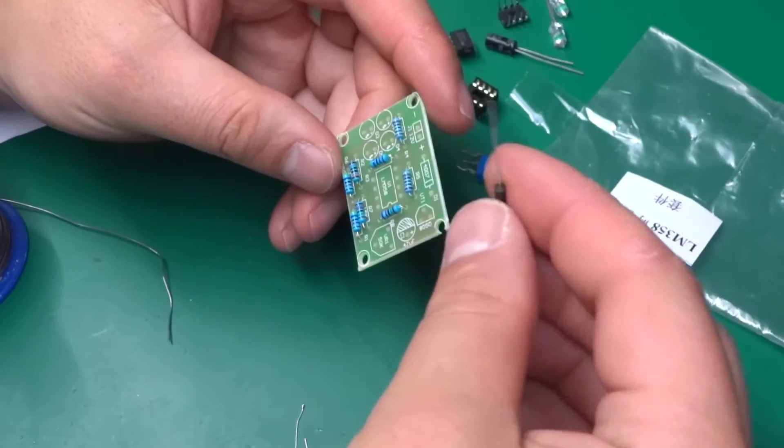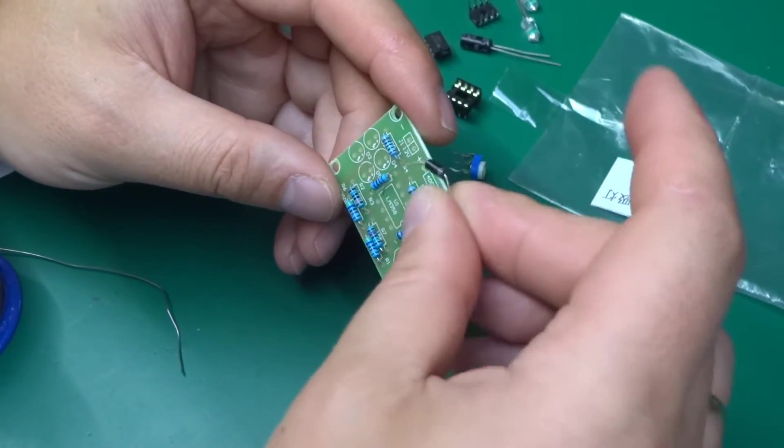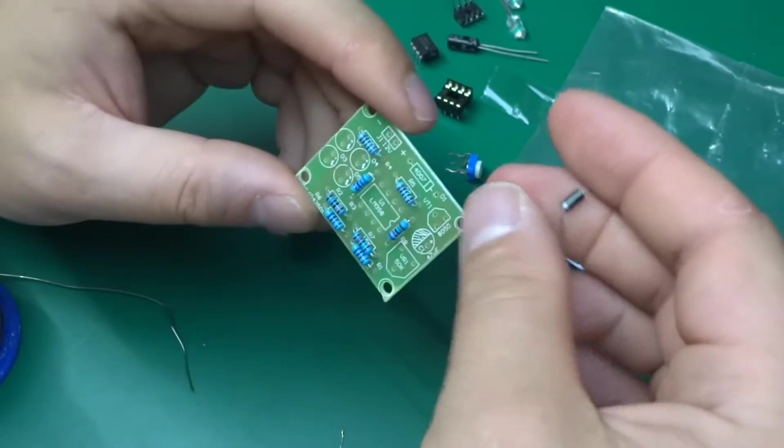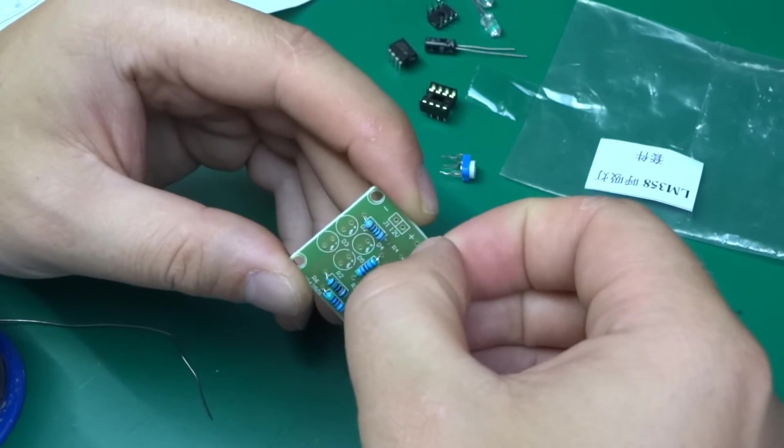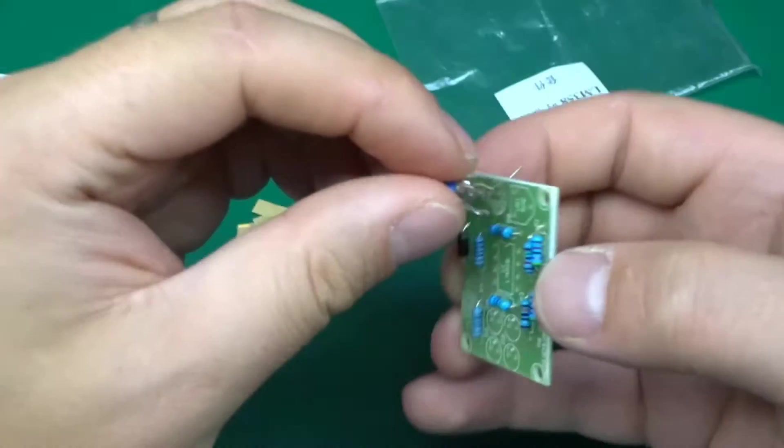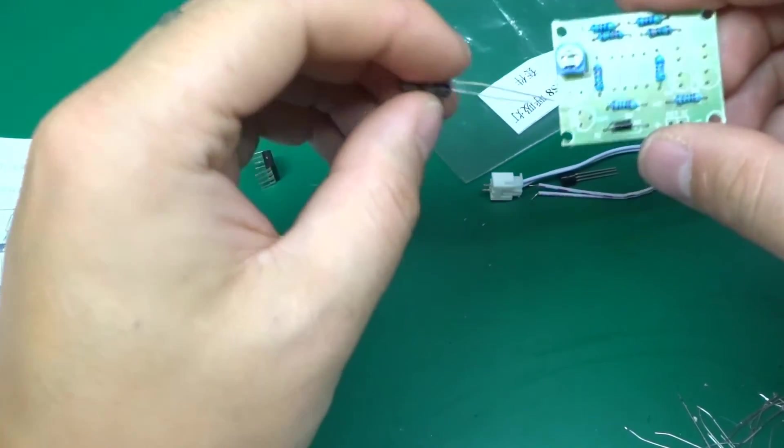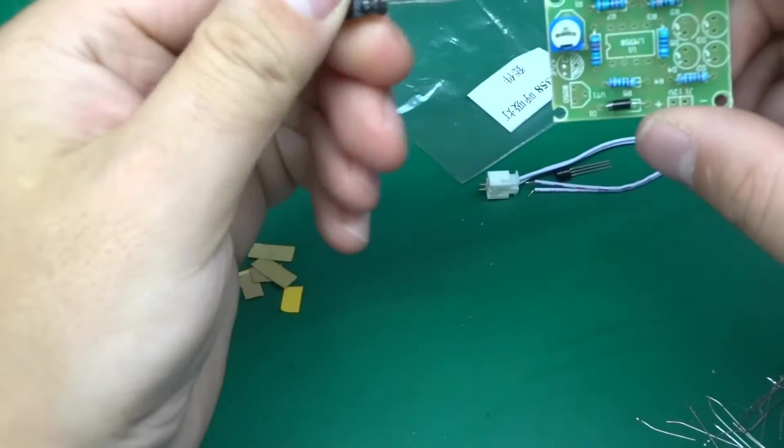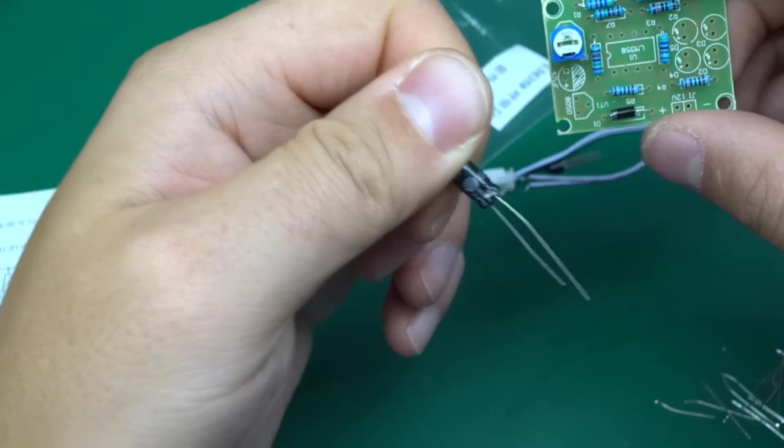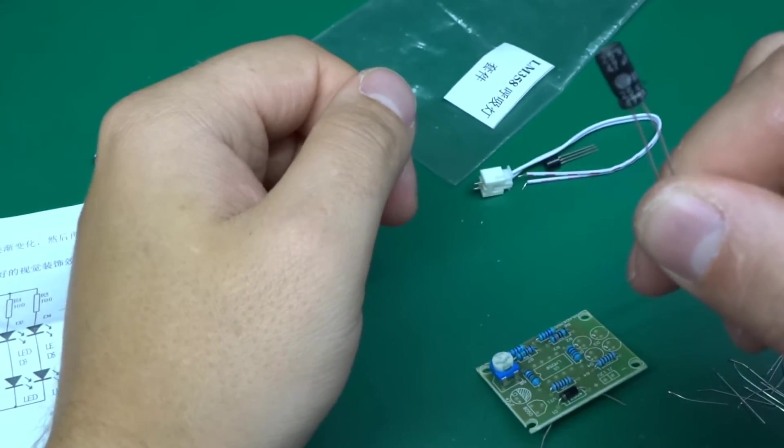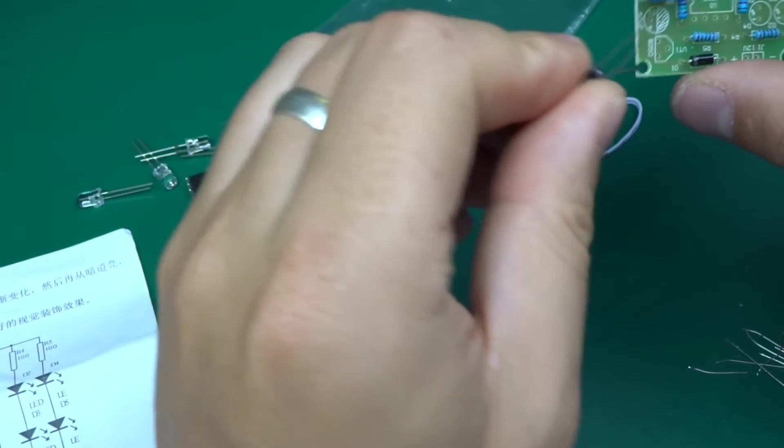We've got one 1N4007 diode - be careful, it's polarized. You can look at the band on the diode and look for a stripe or band on the silkscreen. We've got the trim pot, and we've got the capacitor. Electrolytic caps are also polarized. The longer leg is the plus, and you've also got the negative marked.